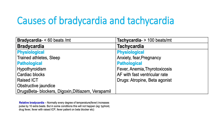Bradycardia means reduced heart rate. Normal heart rate is somewhere around 70 to 100 beats per minute. If it is more than 100, we call it tachycardia. If it is less than 70, we can call it bradycardia. But many books define bradycardia as less than 60 or less than 50. So significant bradycardia is always less than 50.